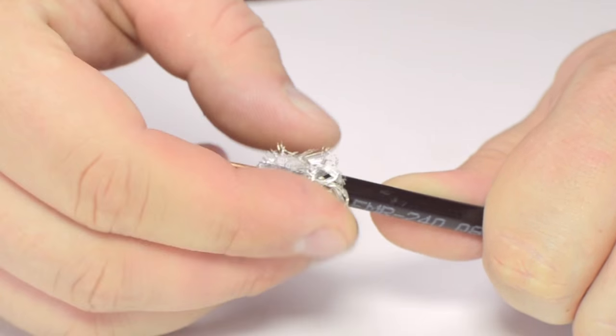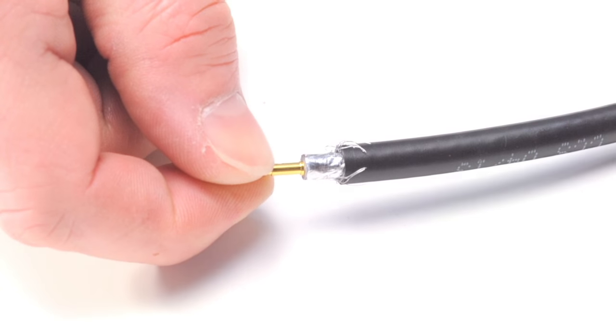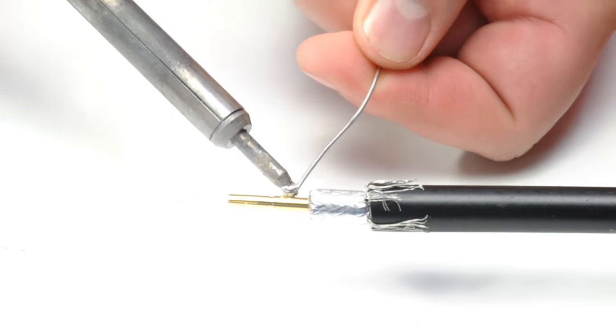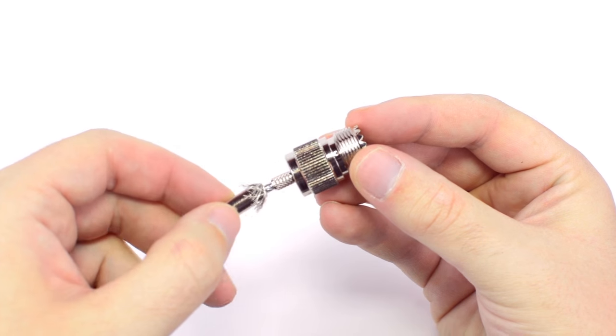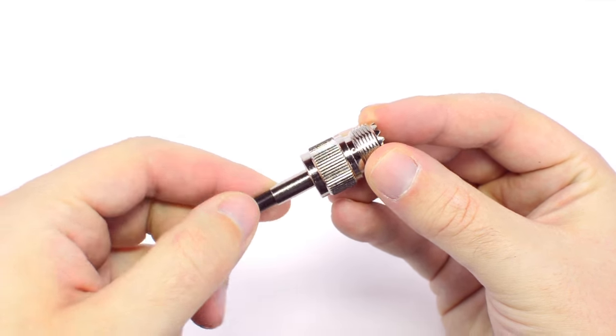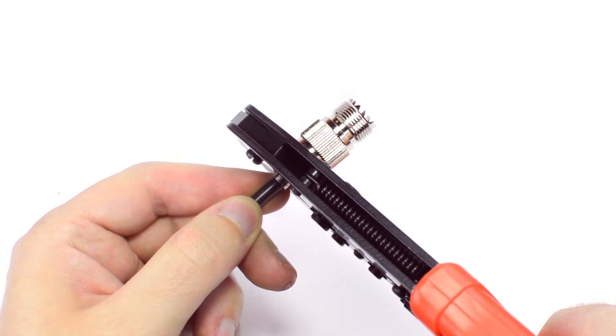Pull back the braided shield and insert the pin onto the center conductor. Solder the pin onto the center conductor and insert the connector housing over the cable. Then slide up the ferrule to the base of the connector, folding the shield with it. Crimp the ferrule onto the outer jacket to complete termination.